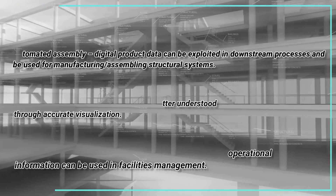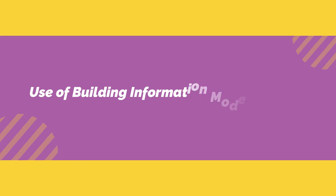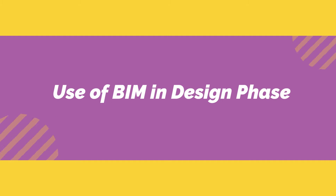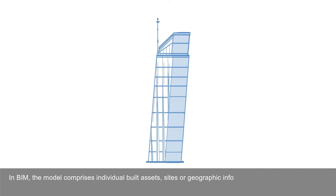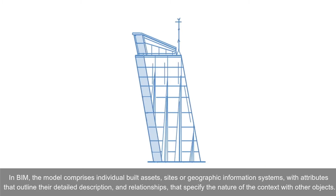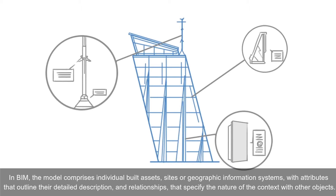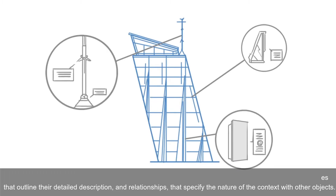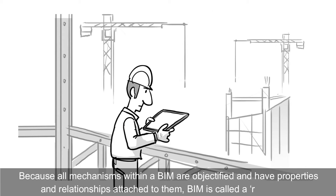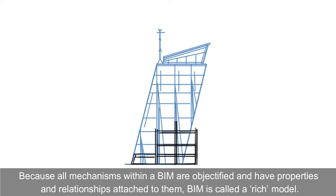Better customer service: proposals are better understood through accurate visualization. Lifecycle data — requirements, design, construction, and operational information — can be used in facilities management. In the design phase, the BIM model comprises individual built assets, sites, or geographic information systems with attributes that outline their detailed description and relationships that specify the nature of the context with other objects.